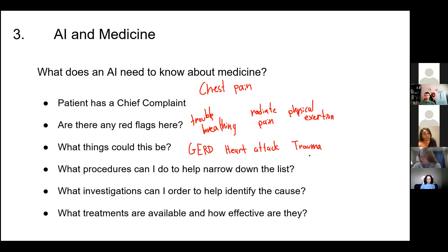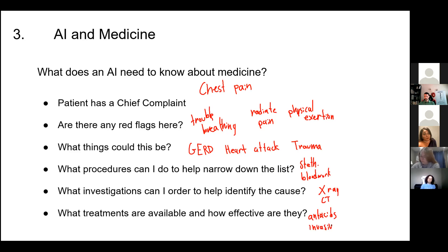The doctor needs to investigate: use a stethoscope, order blood work, do x-rays, put the patient in a CT scan to check for cancers. And they need to think about what treatments are available and how effective they are. If the patient has gastroesophageal reflux, all they need are antacids. But if they have a heart attack, they need invasive procedures. If major trauma, they might need surgery. How do you go through all of this in a ten-minute interview? Somehow doctors have been able to do it. But the main thing we can do is leverage AI at every level of these tasks to help speed diagnosis.